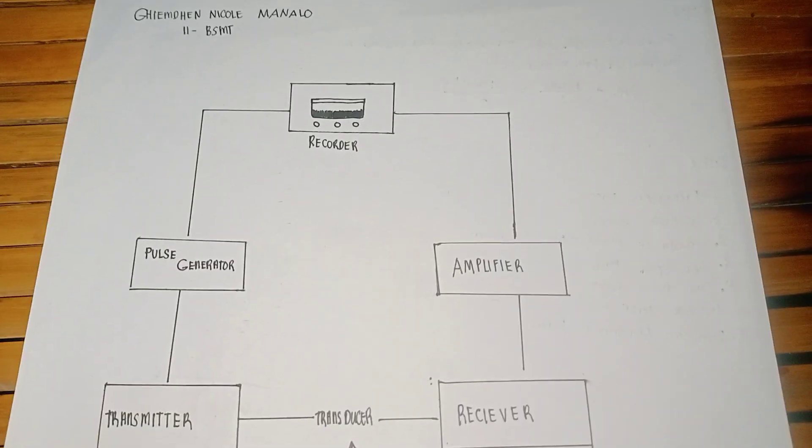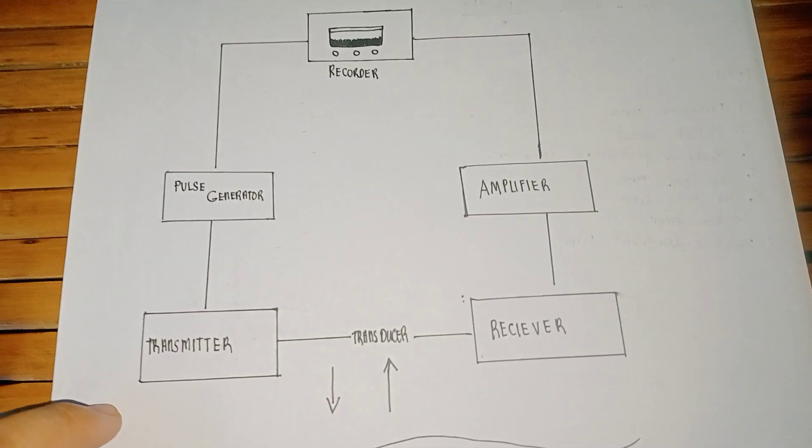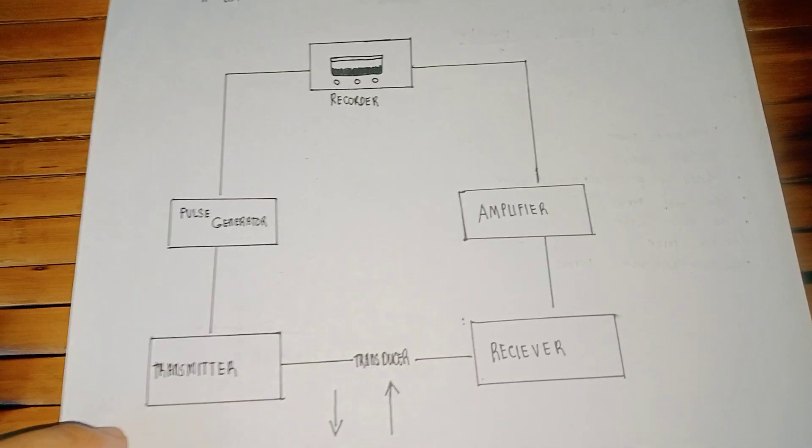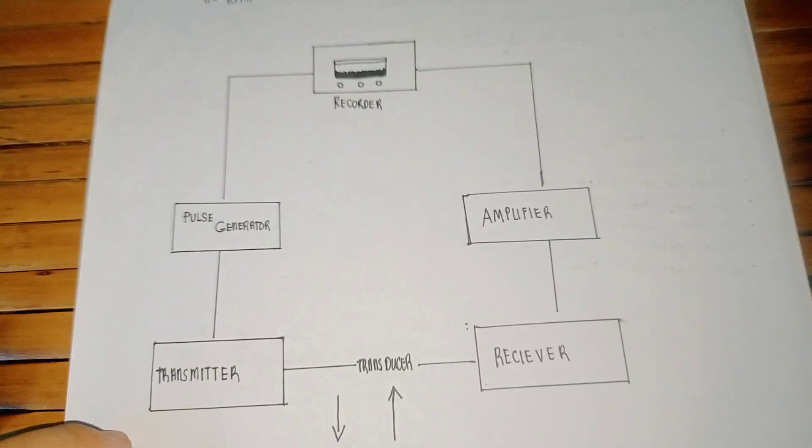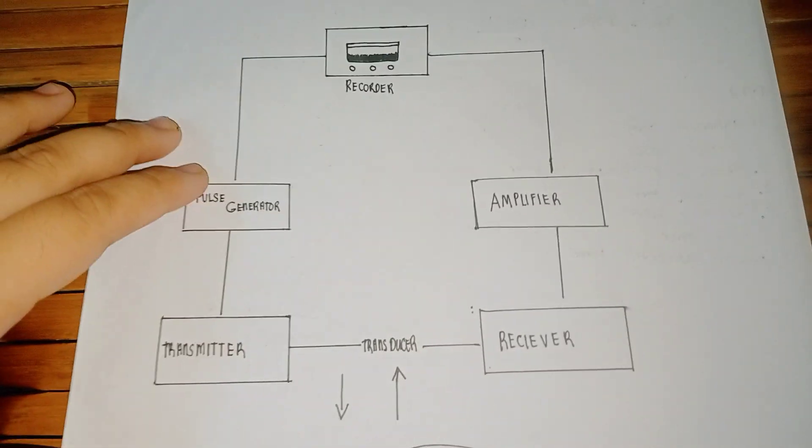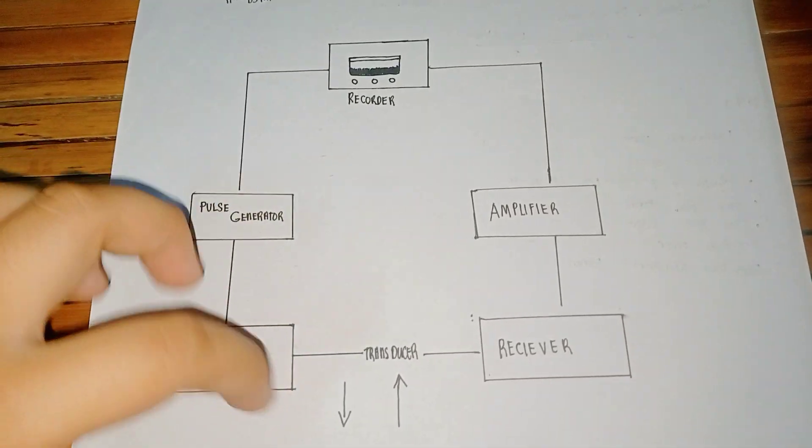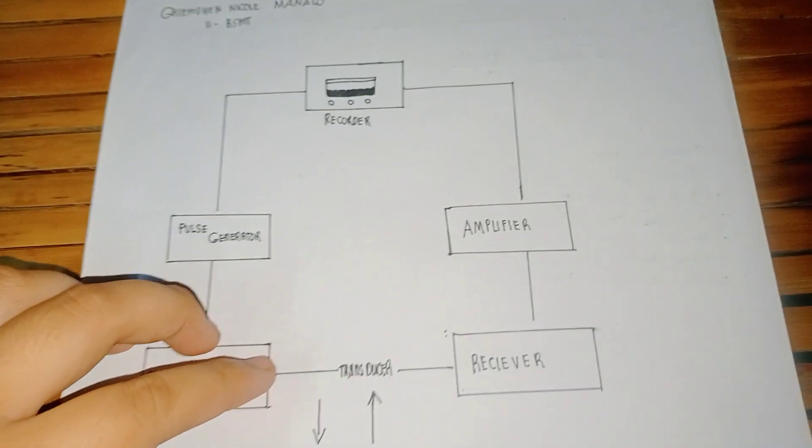In Task 1, we have to explain through illustration the operating principle of how an echo sounder measures the depth below the transducer. This is how I illustrate the operating principle of the echo sounder.